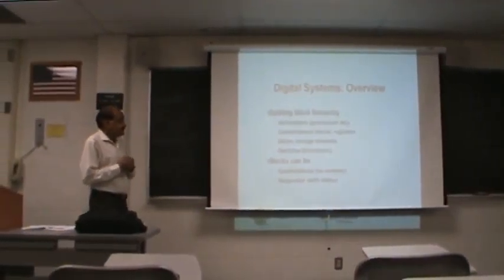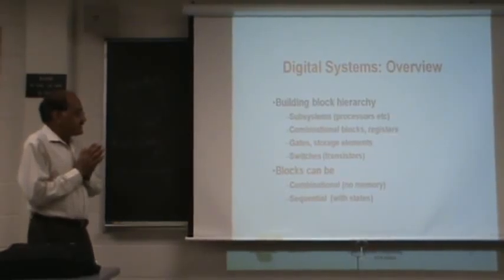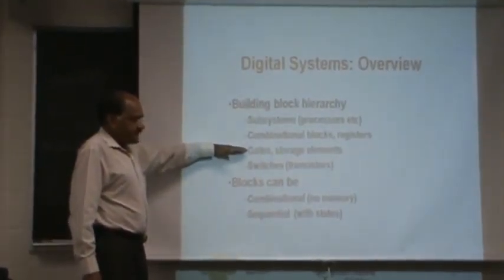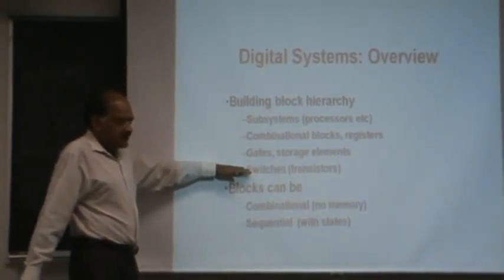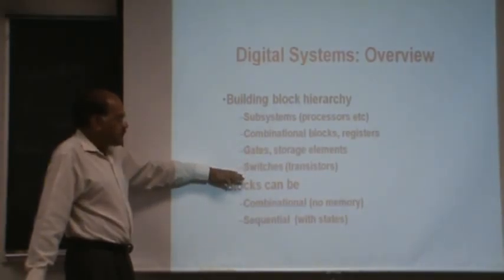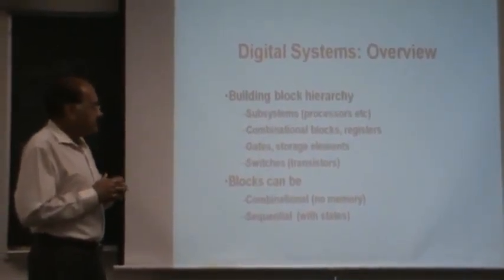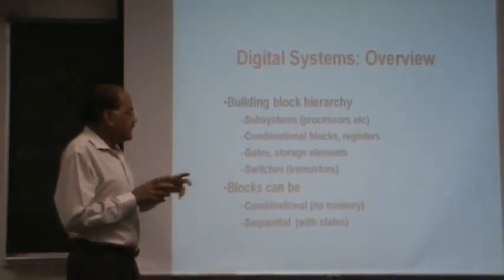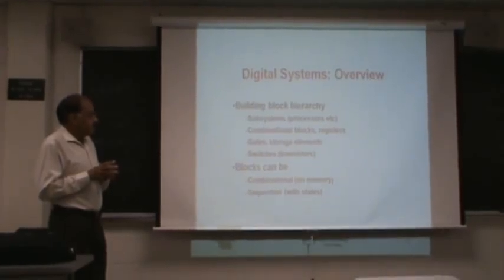For digital systems, you know that we can build them hierarchically. At the bottom you have gates and flip-flops, and below gates and flip-flops you have transistors. Gates and flip-flops are constructed using transistors. With gates, you can construct combinational blocks and registers. Then you can put combinational blocks and registers together to create subsystems, which could include processors, memories, and so on.